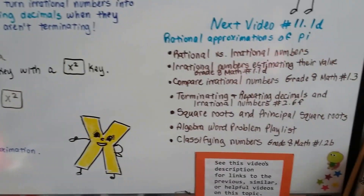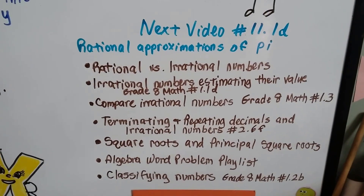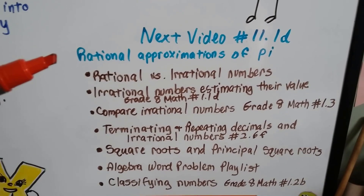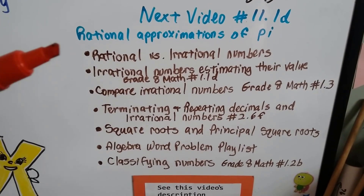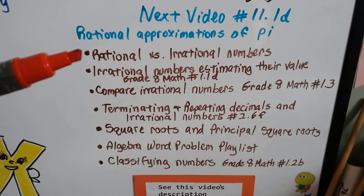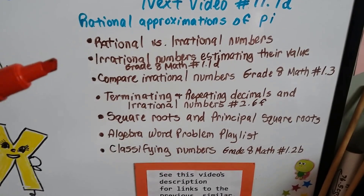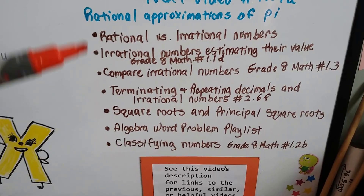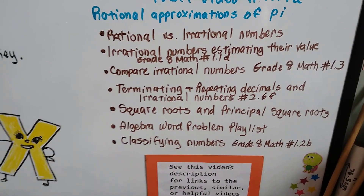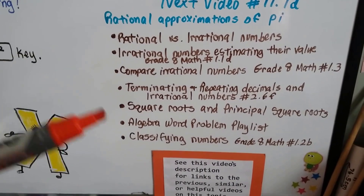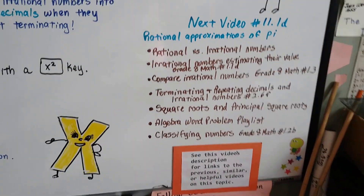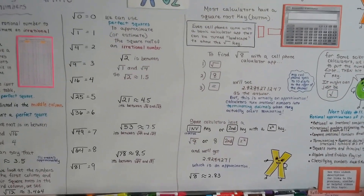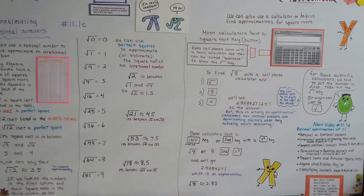Our next video is going to be 11.1d, and we're going to talk about the rational approximations of pi — 3.14. If you want to know about the previous video where we talked about rational versus irrational numbers, or if you want to link to the first chapter of my grade eight math playlist, there are links in the description of this video. Let's go talk about pi. I hope you're okay — I'll see you next video. Bye.